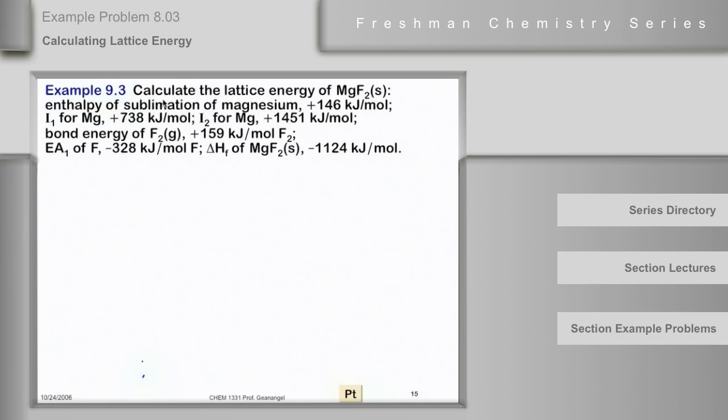The enthalpy of sublimation of magnesium is plus 146 kilojoules. The first ionization energy of magnesium is 738. The second is 1451. The bond energy of difluorine is 159 per mole. The electron affinity of fluorine is minus 328, and the delta H of formation of magnesium fluoride is minus 1124.